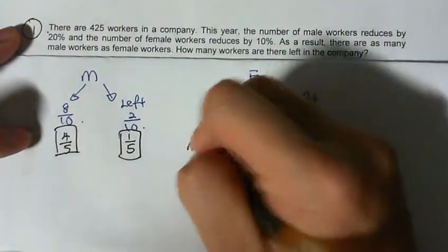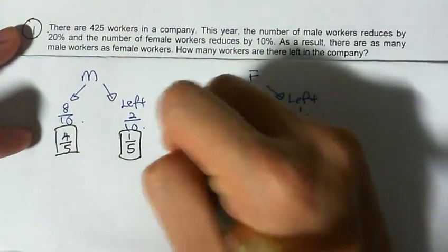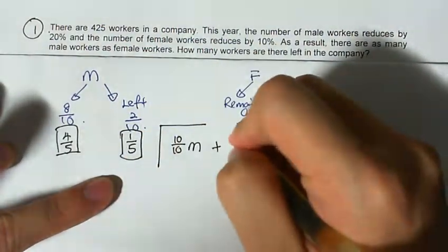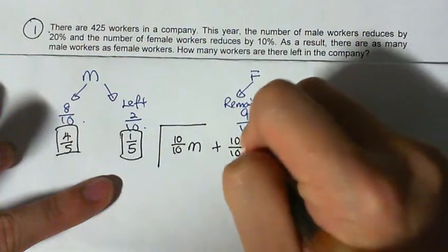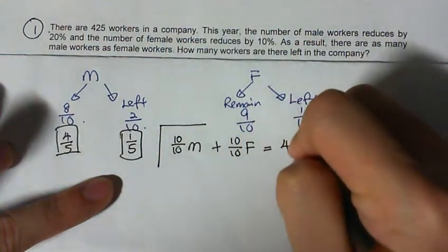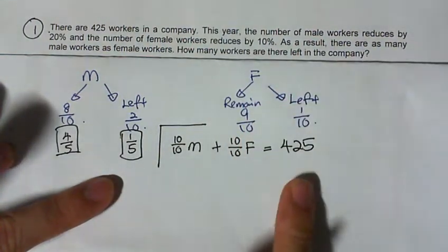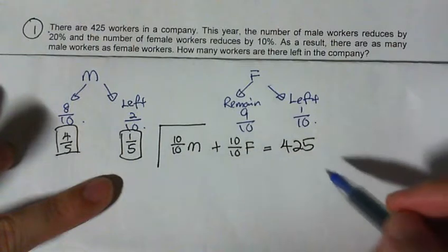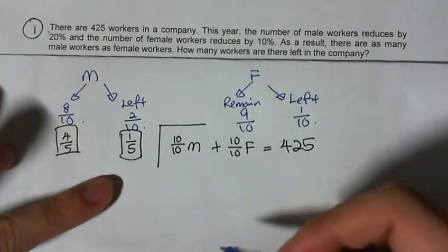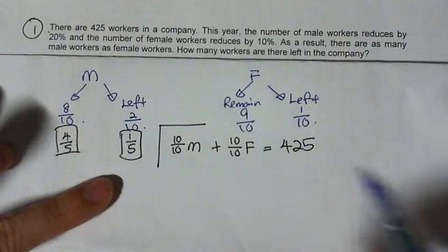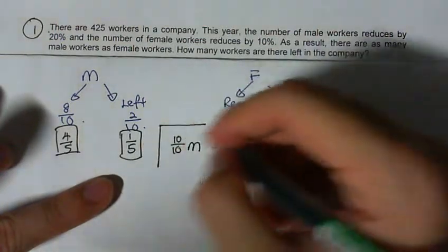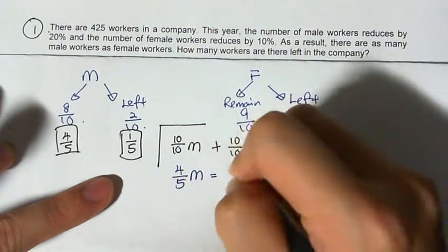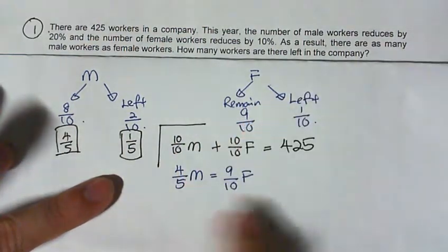Plus 10 over 10 female equals to 425. This I know for sure. Then next, I know that the number of females that remain and the number of males that remain are the same. So basically, four-fifths of male is the same as nine-tenths of female. So these two are the same.